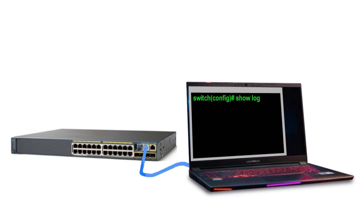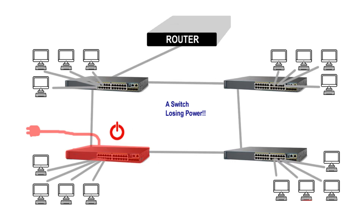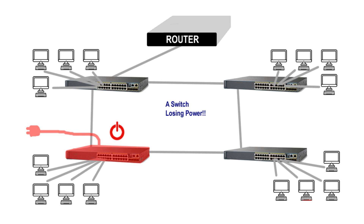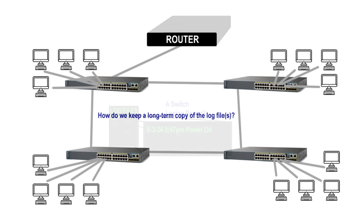99% of the time these log files are only stored in the temporary RAM memory of the switch or router. So if the switch or router you managed to log into lost power or rebooted at some point, it will only have log file entries since it powered back on. Those entered before it powered off or lost power are gone. This can be bad and very unreliable, especially for troubleshooting. Therefore, you need a way to keep a longer record of those log file entries for short-term research of what may have occurred on the network.